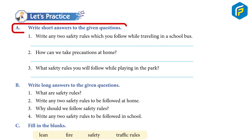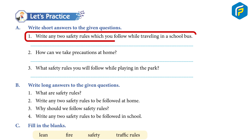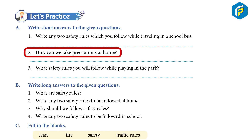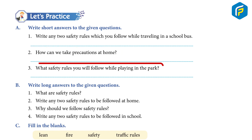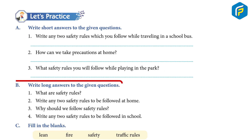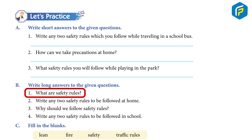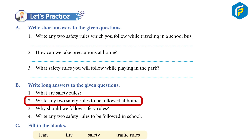Let's practice. A) Write short answers: One, write any two safety rules which you follow while traveling in a school bus. Two, how can we take precautions at home? Three, what safety rules will you follow while playing in the park? B) Write long answers: One, what are safety rules? Two, write any two safety rules to be followed in school.